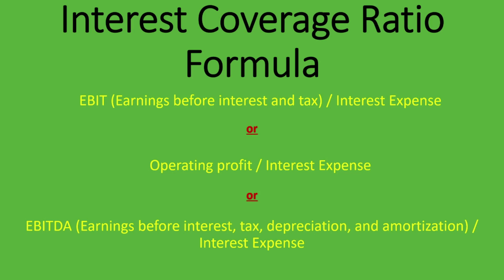If you don't offer credit to customers or lend money in your usual course of business, interest income won't be an operating income item — it comes after operating profit, which is how you arrive at EBIT. So operating profit only accounts for income and expenses from operations, while EBIT includes all income including other non-operating income. EBITDA adds back depreciation and amortization, which are non-cash items.